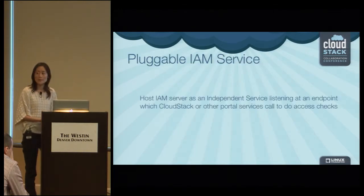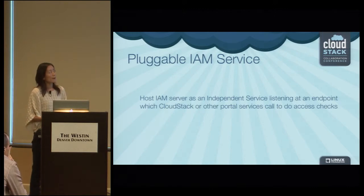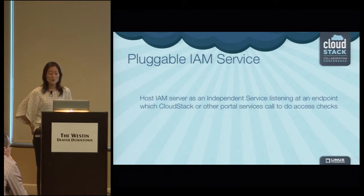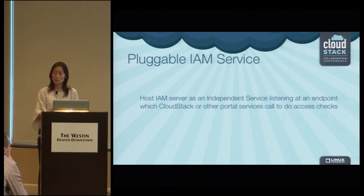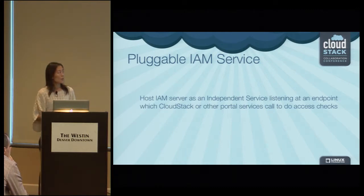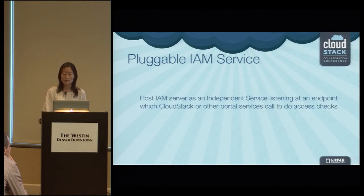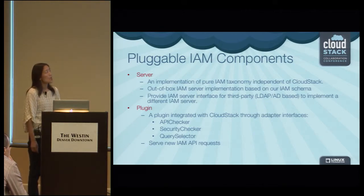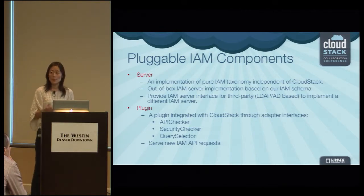We want to implement IAM as a pluggable service. Just like AWS IAM service, we want to follow service-oriented architecture so it is loosely coupled with the CloudStack core. We want to host the IAM server as an independent service running on a separate server listening at a certain endpoint, so that CloudStack or other portal services can make calls to do access checking. This IAM service consists of two components: the IAM server and the IAM plugin.